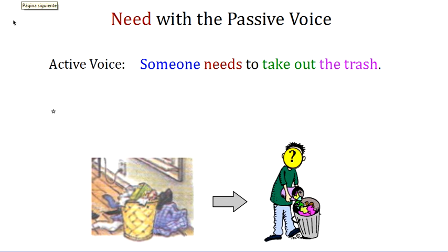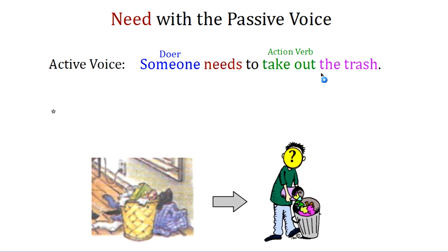The first one we are going to look at is using 'need' with the passive voice. If you don't remember what the passive voice is, let's just remember the active voice. This sentence is the active voice: 'someone needs to take out the trash.' The active voice begins with someone doing the action — someone is the doer. Then we have our verbs; 'take out' is the action verb. The trash is receiving this action — that's the receiver. That's the doer, the action, and the receiver in the active voice.